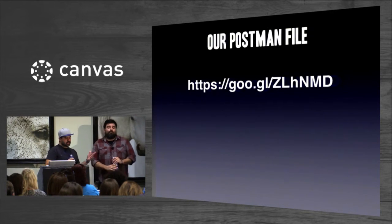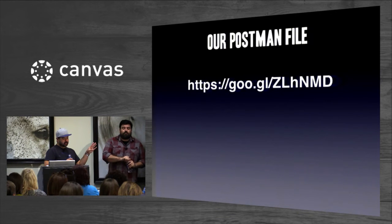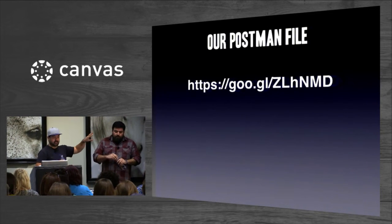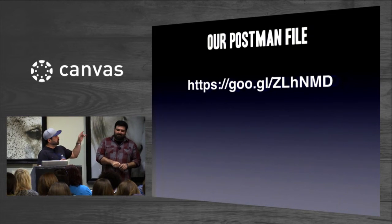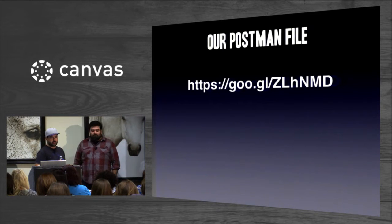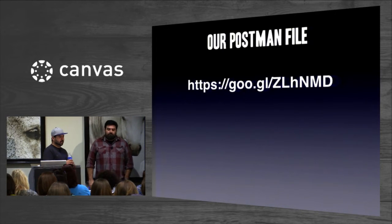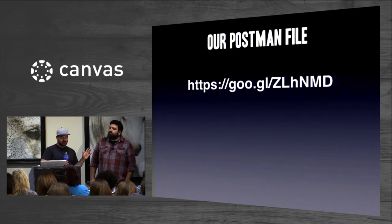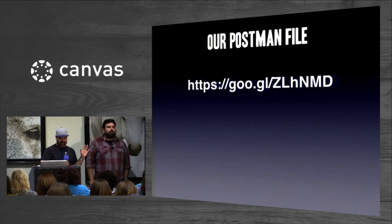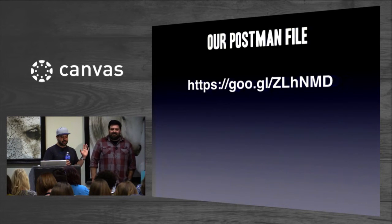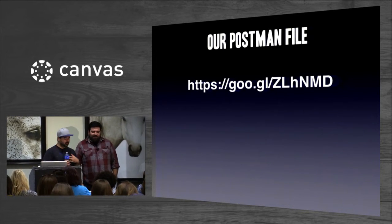So now we have all the pieces: Postman with JetPacks installed, a list of course codes in CSV format. We're going to provide you with our Postman file that we use to bulk copy courses. Please take photos of this. Also, these URL shorteners are case sensitive, so you've got to use the right capitalization. We'll have this slide up at the end too. Also, there's no warranty on this. We are distributing this in the hope that it will be useful — no real or implied warranty. Use at your own risk, and don't blame us if you destroy all your courses.